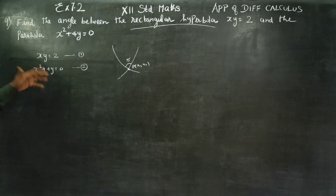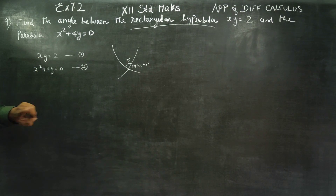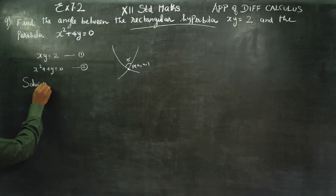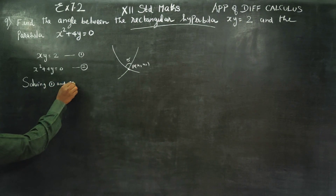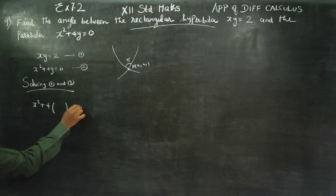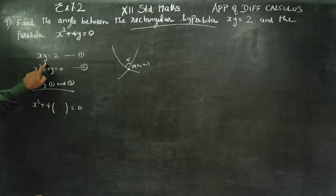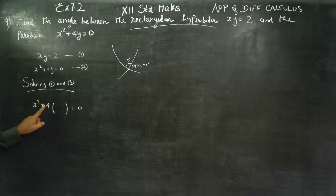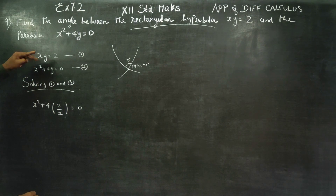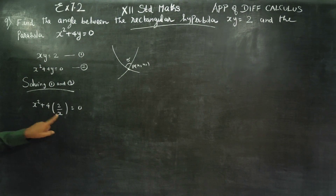You can use substitution or elimination to solve the two equations. Solving equations 1 and 2: from equation 1, xy = 2, so y is equal to 2 by x. Substitute 2 by x in place of y into equation 2: x squared plus 4 times (2 by x) equals 0.